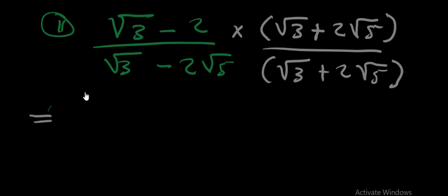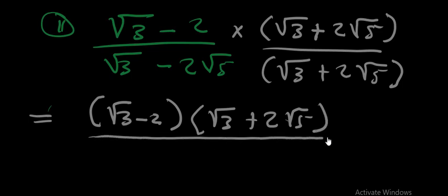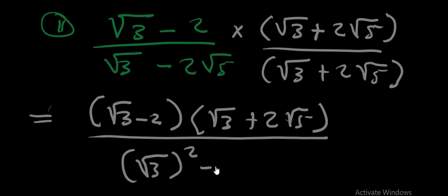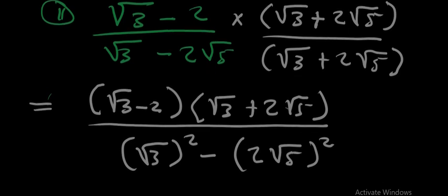We are going to multiply the numerator: open brackets square root 3 minus 2, times open brackets square root 3 plus 2 square root 5. The denominator is just the difference of two squares, so we are going to have square root 3 squared minus open brackets 2 square root 5 squared.